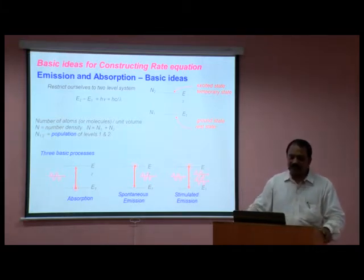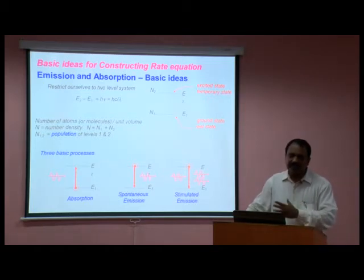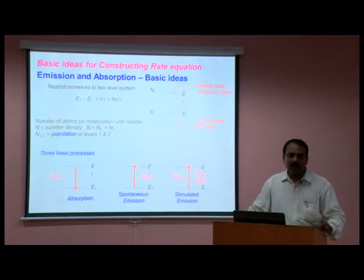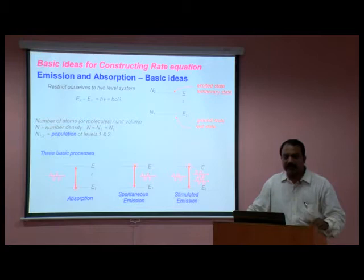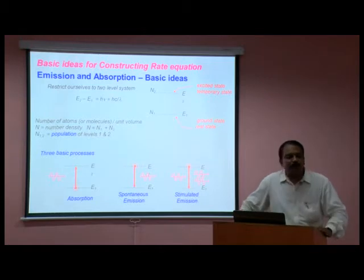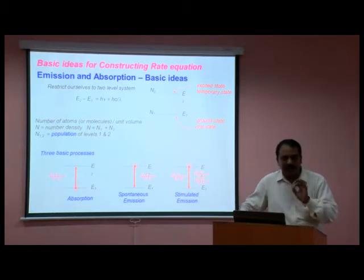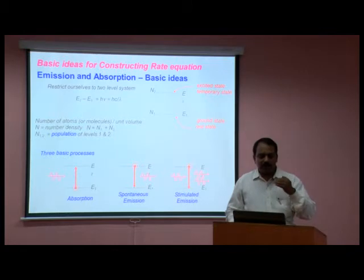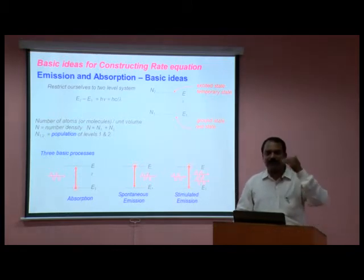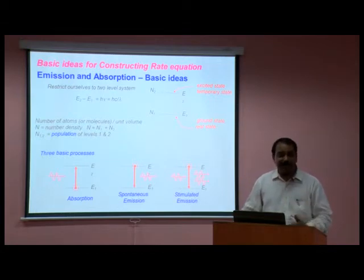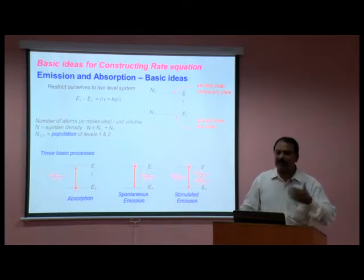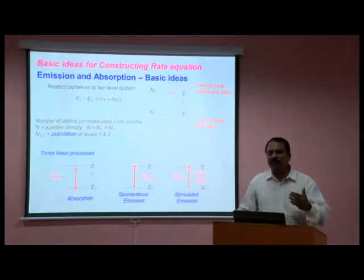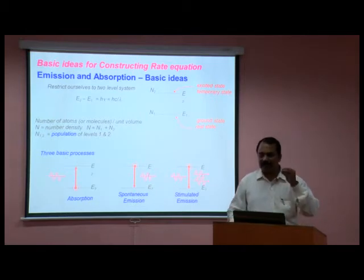The three basic processes: absorption — first, when an atomic assembly is exposed to light energy, the ground level atoms will absorb that energy and move from the ground level to the upper level. This process is called stimulated absorption. Next, the excited atoms in the second level can come automatically to the lower level after the completion of their lifetime.